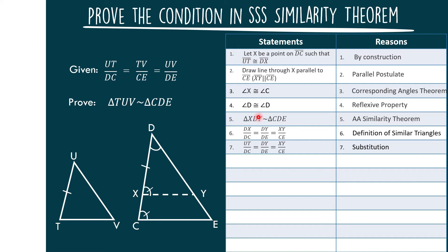Since in statement number 1 we said that DX is equal to UT. Number 8: UT over DC is equal to TV over CE, is equal to UD over DE.